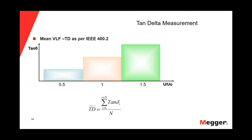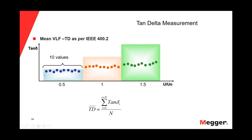The first evaluation criterion is the mean value of the tan delta — we add all the individual values of the tan delta for each voltage step and divide by the number of measurements. In this case 30, because we have 10 measurements at each of the three voltage steps. The second criterion is the delta of the tan delta: the mean value of the tan delta at 1.5 U0 minus the mean value at 0.5 U0.